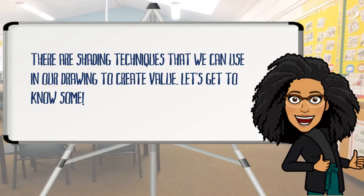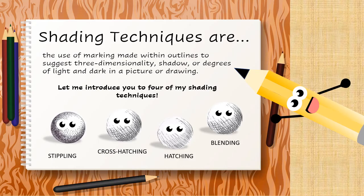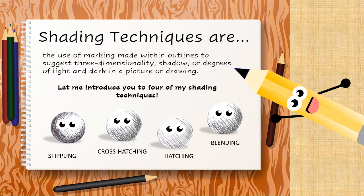There are shading techniques that we can use in our drawings to create value. Shading techniques are the use of markings made within outlines to suggest three-dimensionality, shadow, or degrees of light and dark in a picture or drawing. Let me introduce you to four shading techniques: stippling, cross-hatching, hatching, and blending.